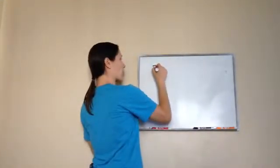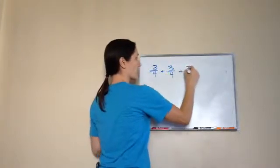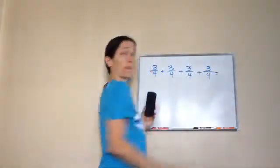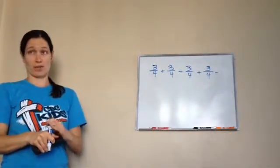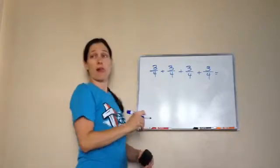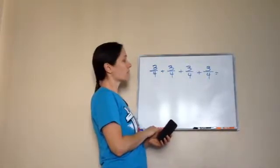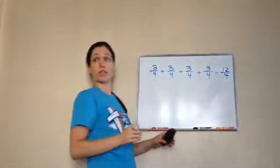Let's do it a little bit harder. Three-fourths plus three-fourths plus three-fourths plus three-fourths. Let's do it the mathematical way. Tell me what your answer is going to be. Mathematical. Oh, twelve. Twelve over four. Very good.